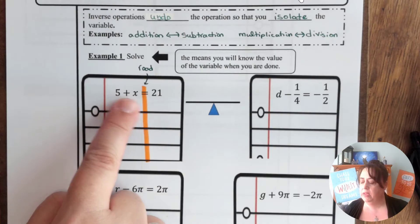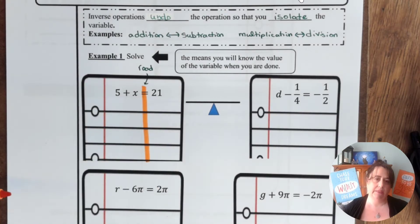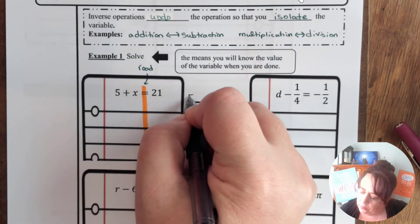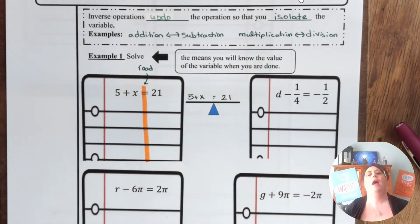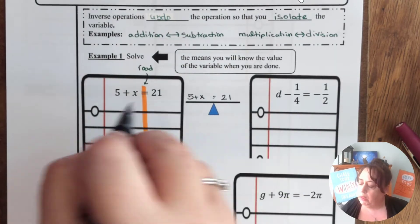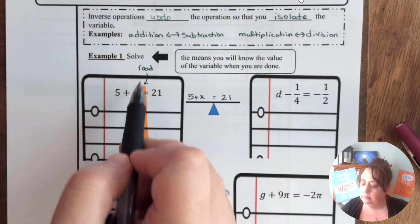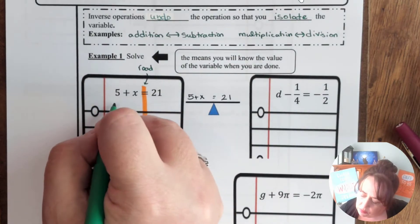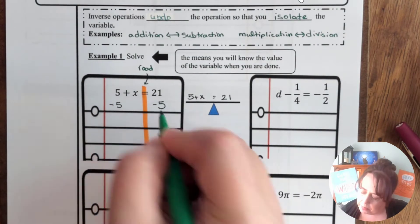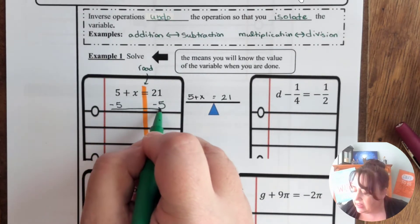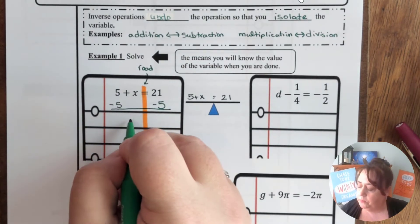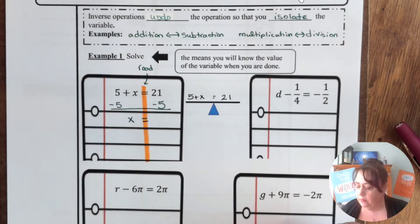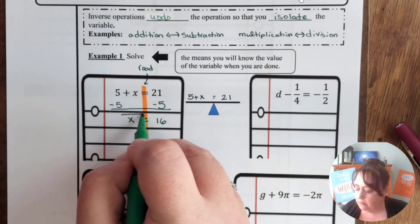So if I look at 5 plus x equals 21, we ask ourselves what happened to x. And so right here I have this little balance here to help us remember that. I have to keep this balanced at all times. So if I had added 5 to x, to undo the addition, I would need to subtract. So I'm going to subtract 5 from both sides. When I subtract 5 from both sides, make sure you put in that line. That's your equal sign. So we wanted to make sure we say it's equals. Put in that equal sign there. 21 minus 5 is 16. And you're done.